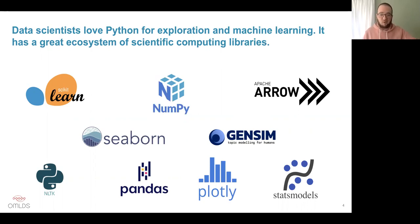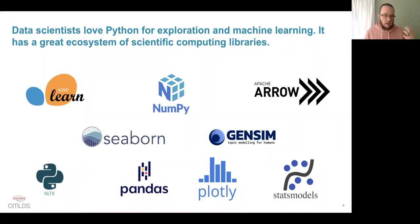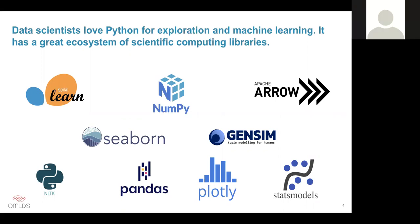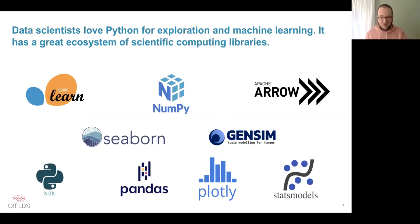The R programming language was created by statisticians primarily for statistics work. That is not true in Python — Python was created as a general purpose programming language. Some of these scientific computing libraries — the fundamental building blocks like manipulating arrays, performing statistical analysis, making data visualization — were tacked on later. That ecosystem is very mature now, with a lot of development attention and hundreds of conference talks about these different packages. Python is a great language for doing machine learning work.